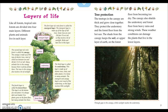The third layer is called the understory. This layer is made up of shorter trees, vines, and other plants, and is home to many animals. The emergent and canopy layers cover much of the understory, so this layer receives little sunlight. The fourth layer is called the forest floor. This layer is at the bottom of a rainforest. It is always dark and shaded, and few plants grow there, but many animals live there.